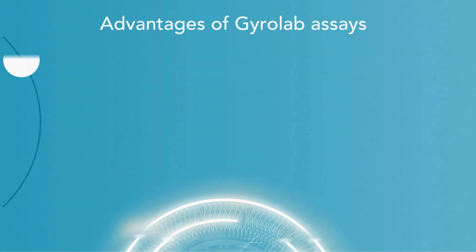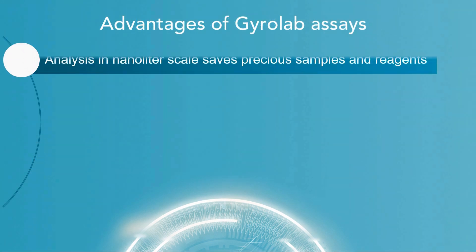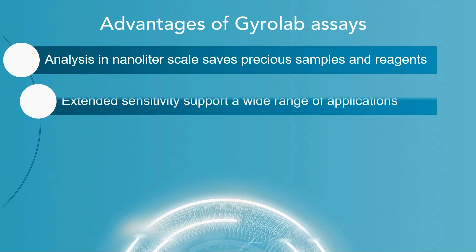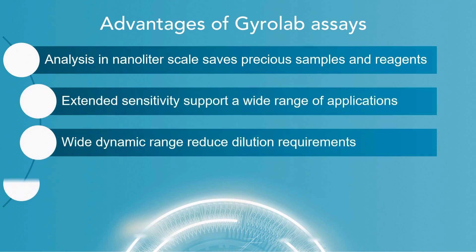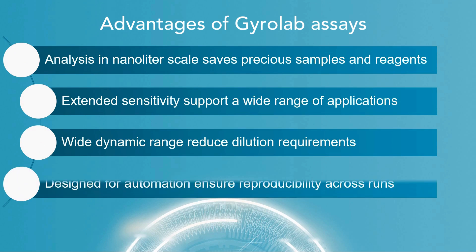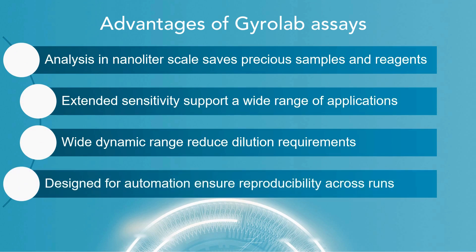Gyrolab technologies offer several advantages over traditional ELISA for immunoassays. One of the most significant advantages is that it requires much smaller sample volumes than ELISA, especially when working with valuable samples where material availability is a limiting factor. Gyrolab's nanoliter-scale reactions allow for efficient use of these samples, ensuring that wastage is minimal.